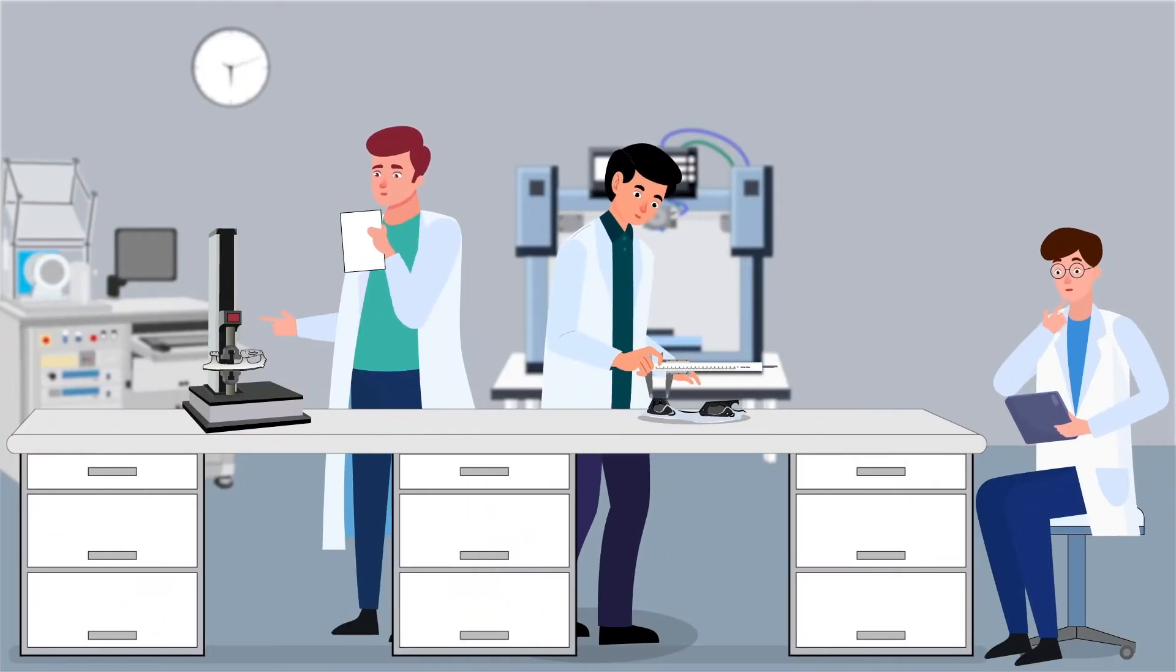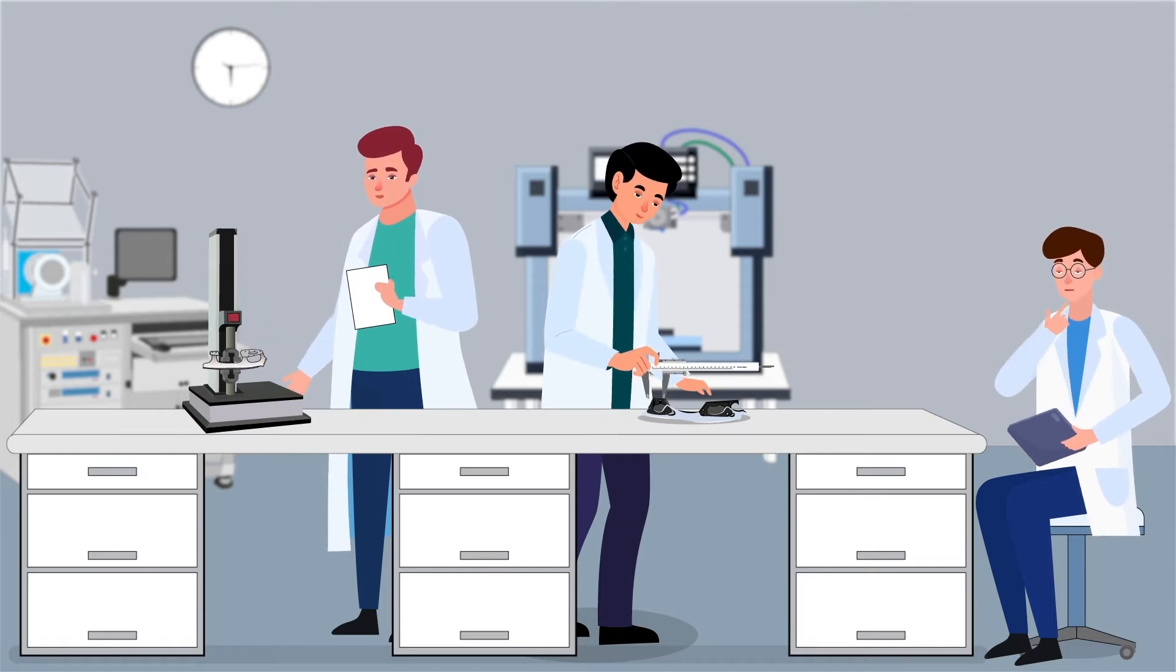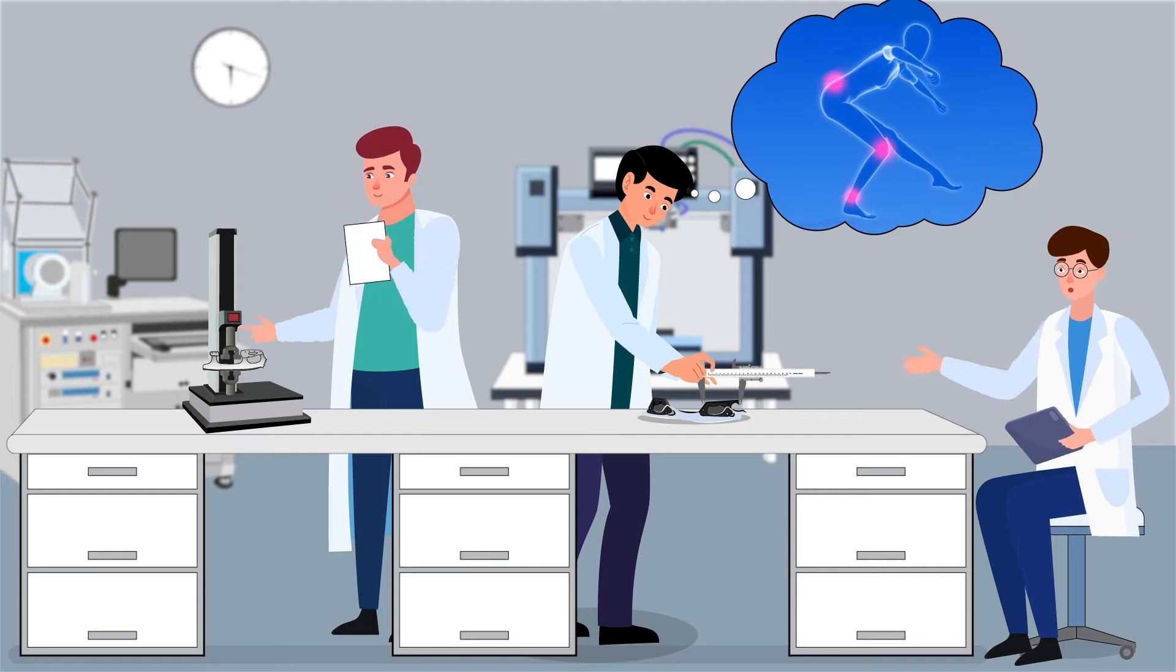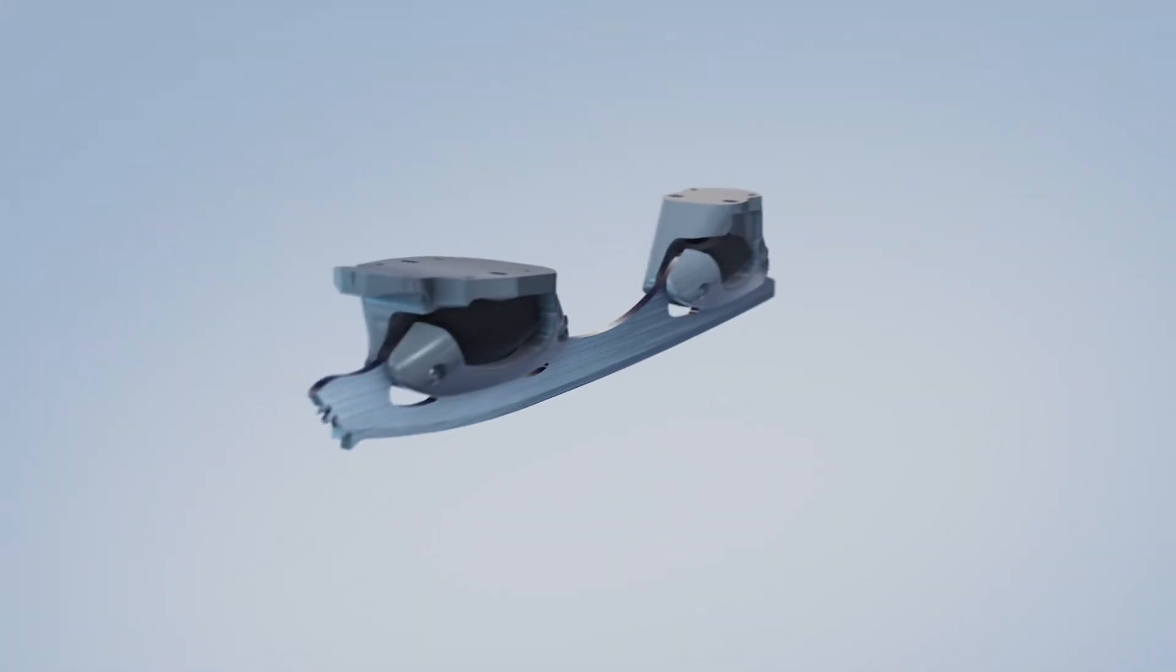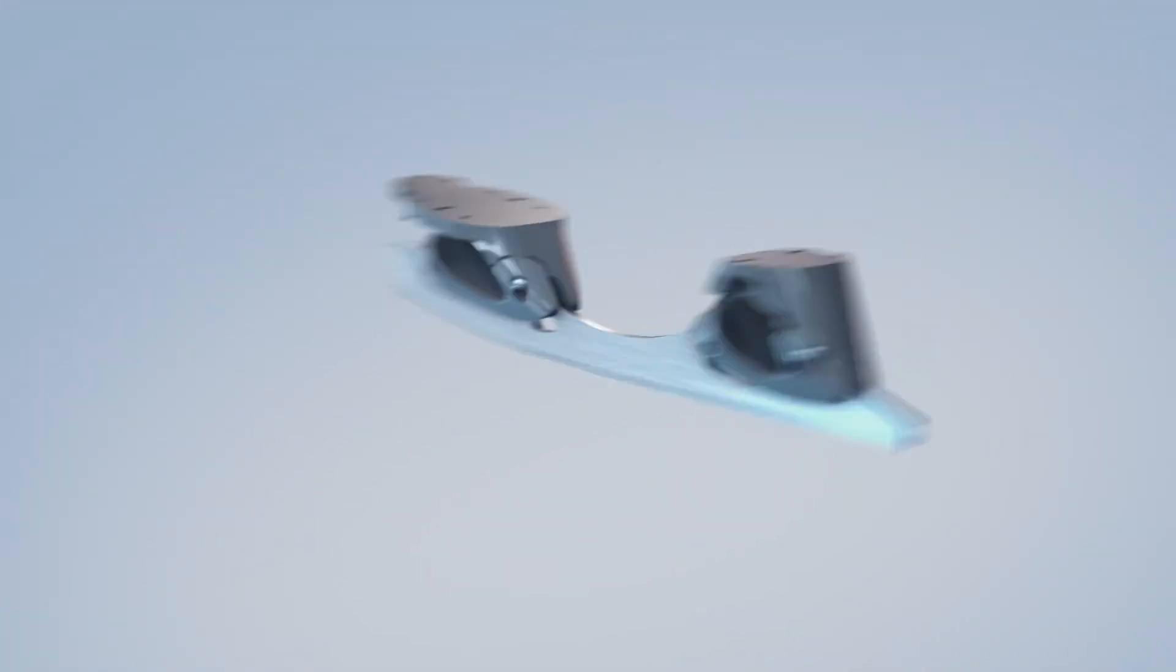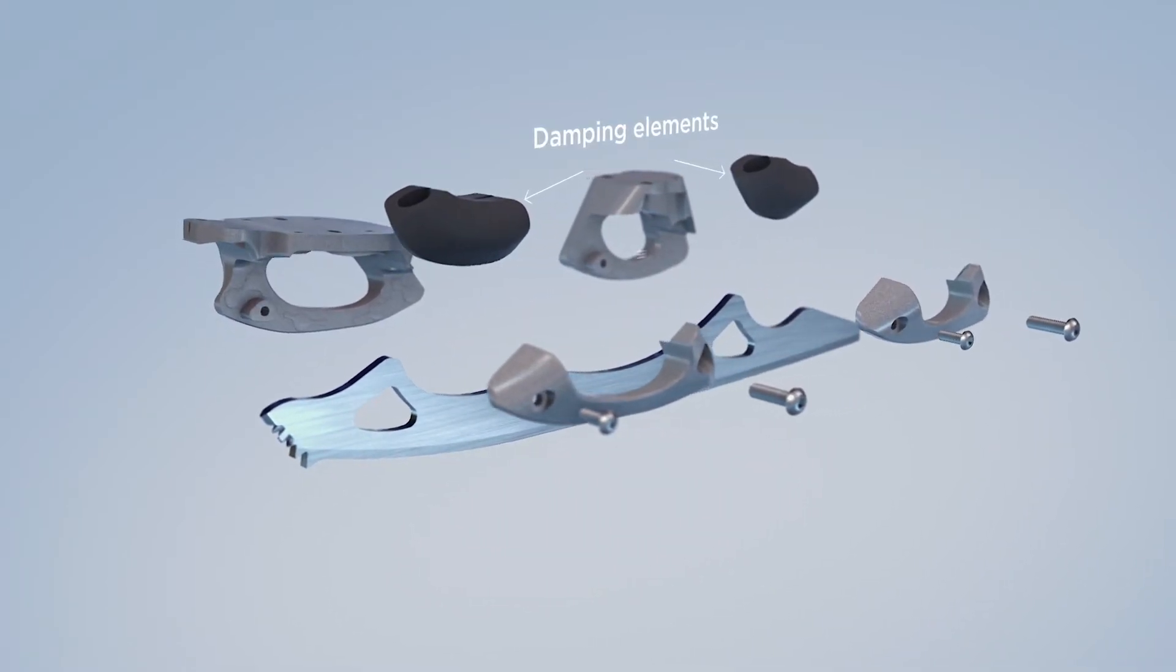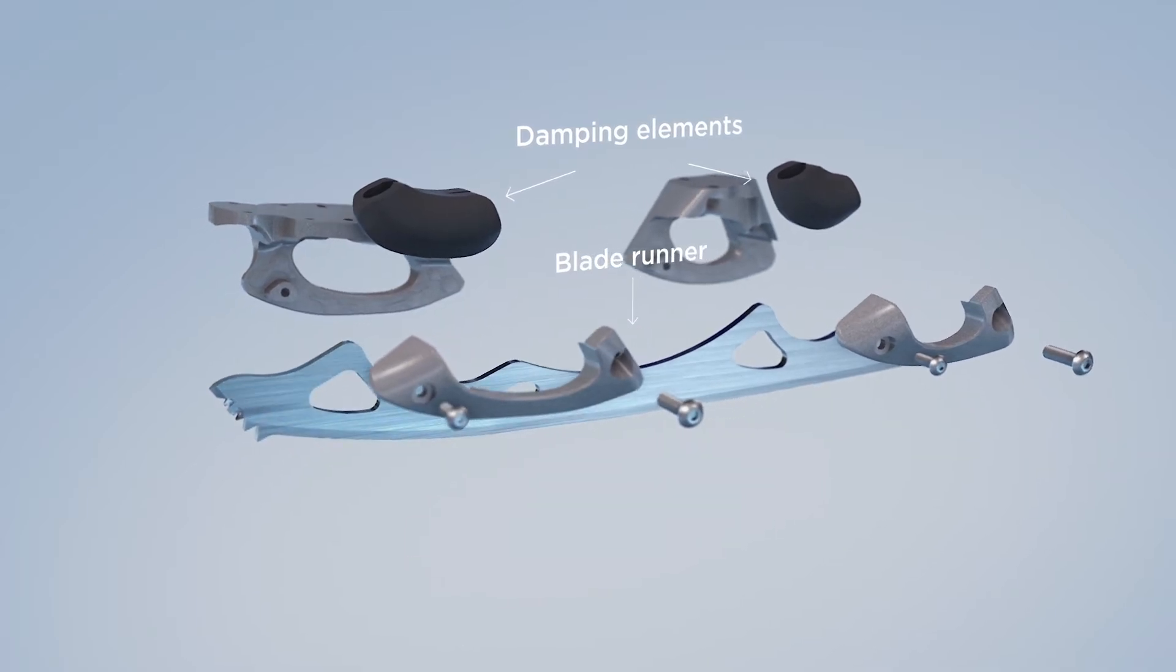The researchers developed a new lightweight figure skating blade with an integrated damping system to reduce the landing impact loads. A blade construction was modified to allow movement of a blade runner inside a frame against stiff elastic damping elements that compress under the impact load.